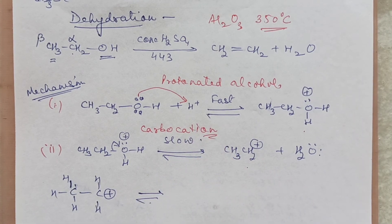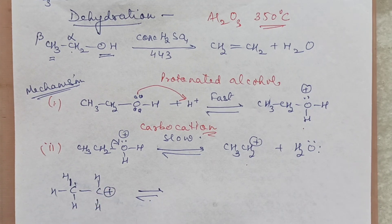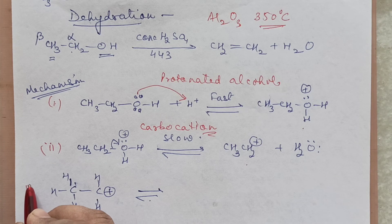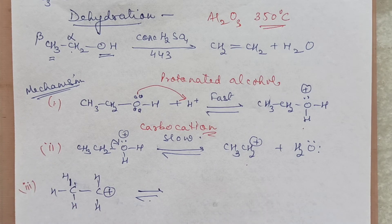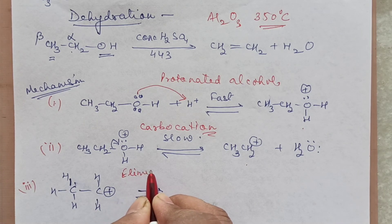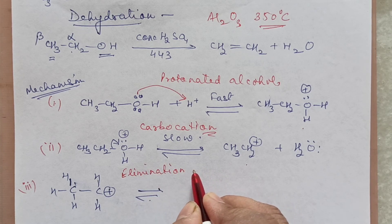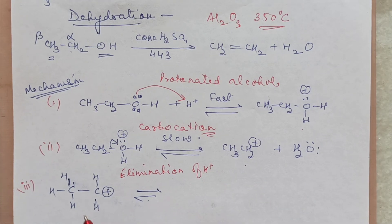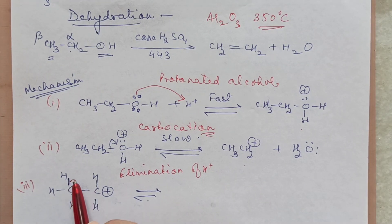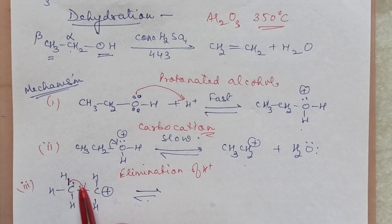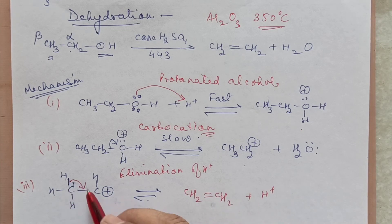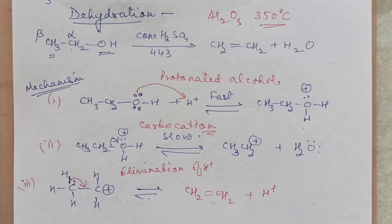If rearrangements are possible, let them happen to form a more stable carbocation. Step 3: the carbocation undergoes elimination of a proton from the beta carbon — the C-H bond electrons move to the carbocation carbon, H+ leaves, and a double bond forms. You get alkene — CH2=CH2. This is how the elimination mechanism works for alcohol dehydration.